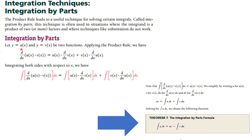Let y equal u(x) and y equal v(x) be two functions. If we apply the product rule, we know that the derivative of uv is u v′ plus v u′. Now, if we integrate both sides of this equation, we will have this expression, and here we're doing the sum of the integrals as the integral of the sum. We can abbreviate this expression because when you integrate the derivative of uv, you get uv.